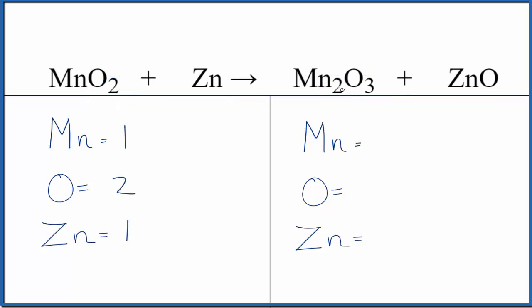In the products, we have two manganese here, and then we have three oxygens, but don't forget this one out here. So we have a total of four oxygen atoms, and then just the one zinc. So be careful with the oxygens.